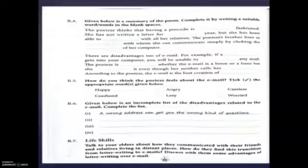The poetess thinks that having a pin code is old-fashioned. She has not written a letter for one year, but she has been able to communicate with all her relatives. The poetess's brother lives in Florida, with whom she can communicate simply by clicking the mouse of her computer.